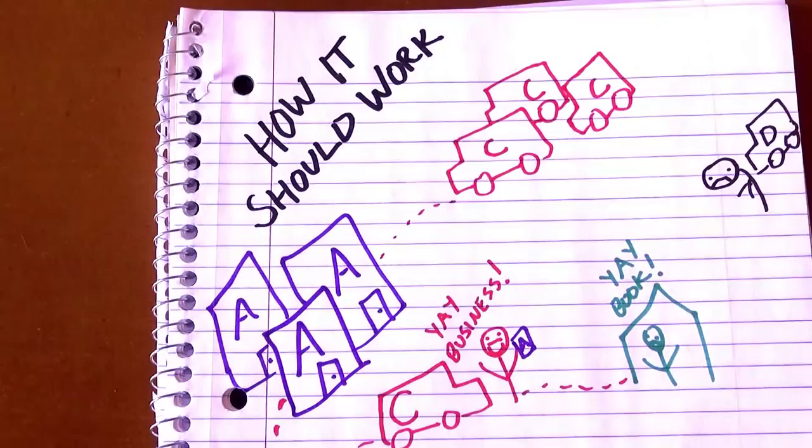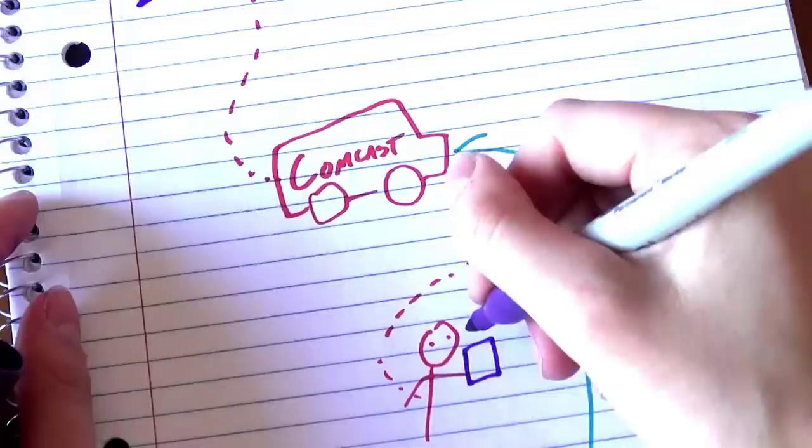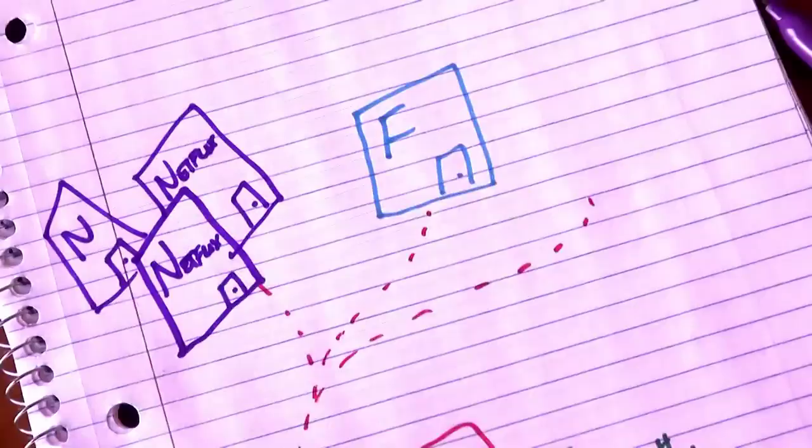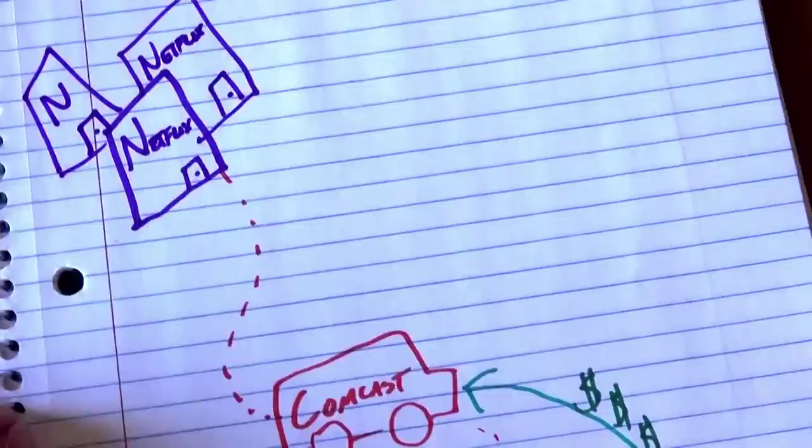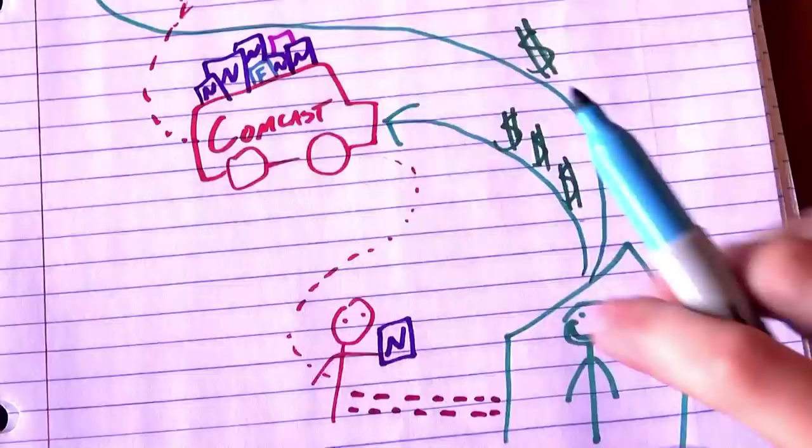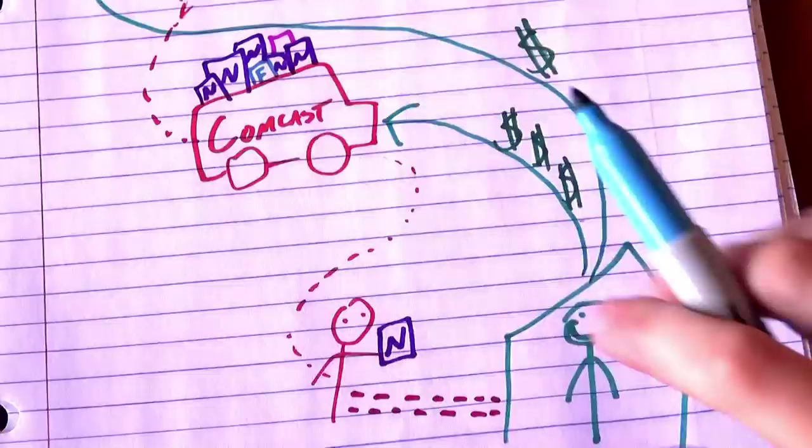So say you have a $100 a month contract with Comcast to deliver you whatever data you order at a certain speed, and you order data from Netflix. Netflix sends the data your way, but just before it gets to your house it has to go through cables Comcast owns. And Comcast says, wow Netflix, you give us so much business. Pay us money or we'll slow down your site until it's frustratingly unusable.